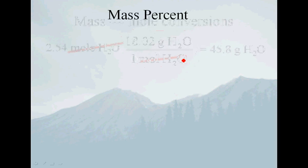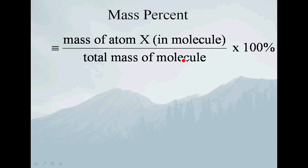Now, sort of as a corollary to this is the concept of mass percent. Mass percent is defined as the mass of a particular atom in a particular molecule divided by the total mass of the molecule. This is easy enough explained by just looking at one simple example.